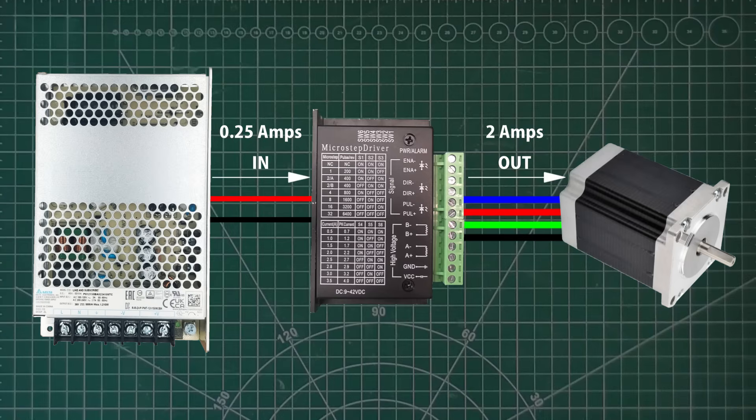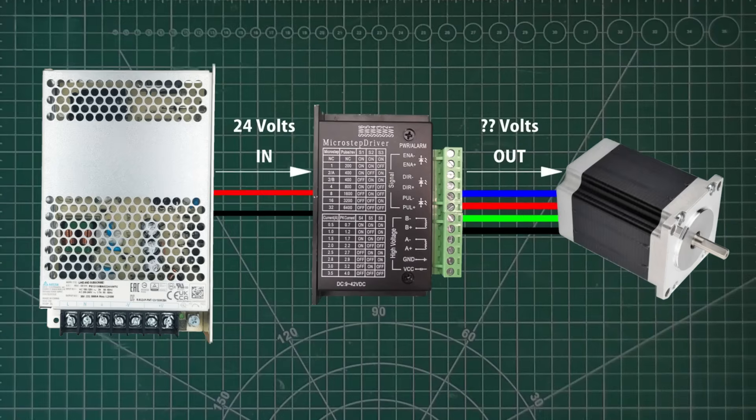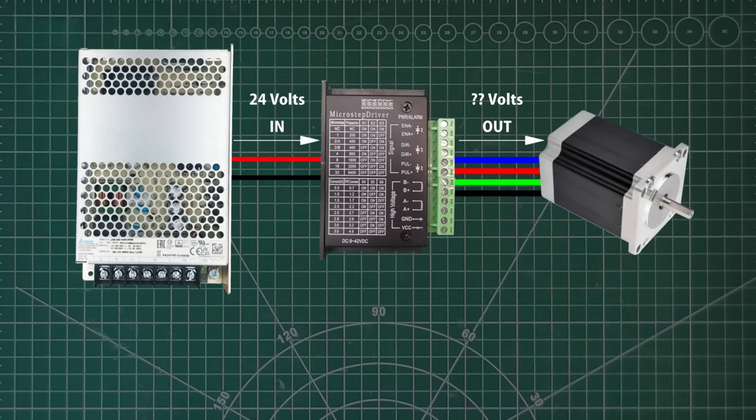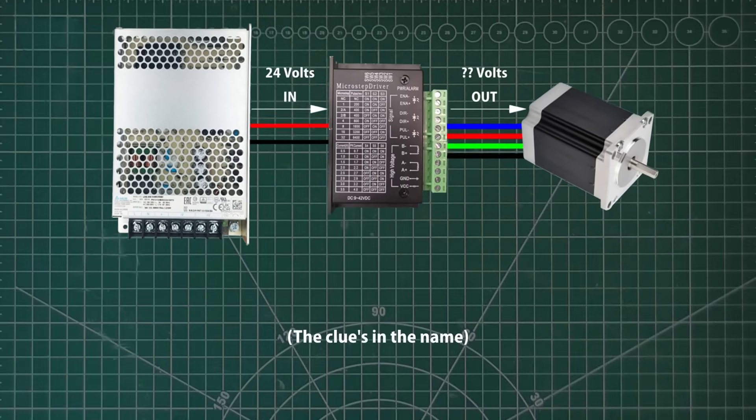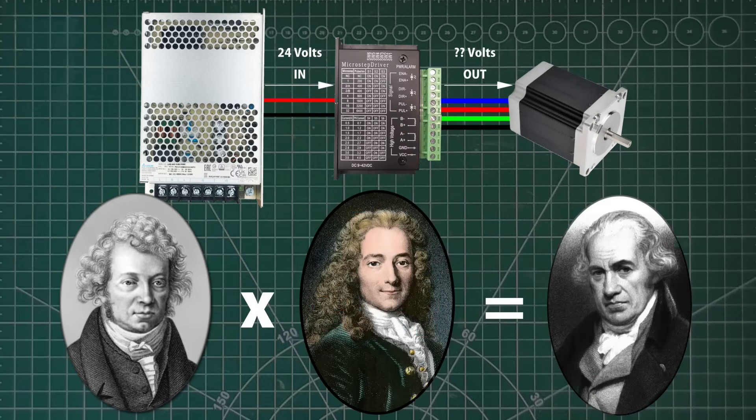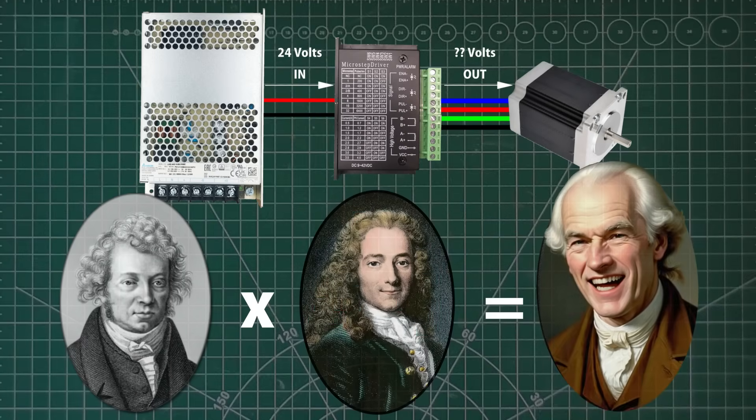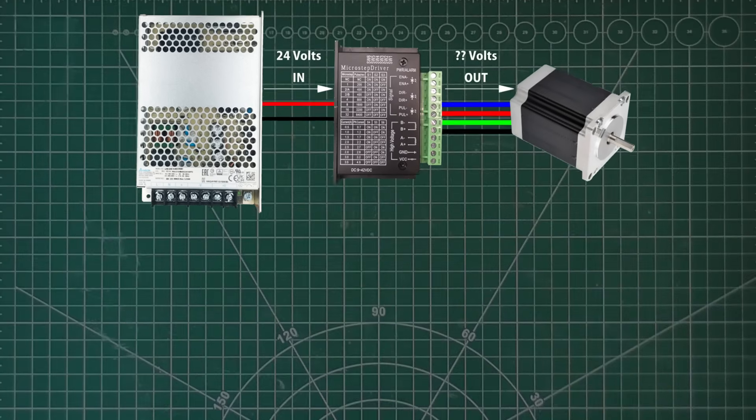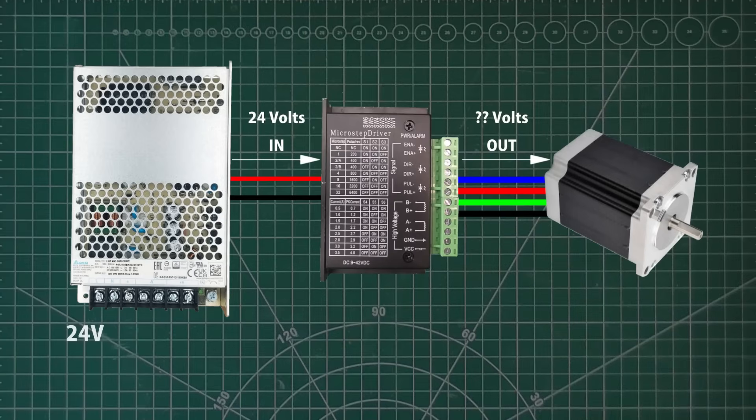What we haven't considered is the voltage. Power supplies don't supply just amps or volts. They supply power. Power is amps multiplied by volts. We know the supply is 24 volts. 24 times a quarter of an amp is 6 watts of power. So without breaking the laws of physics, the most power the motor can consume is also 6 watts.